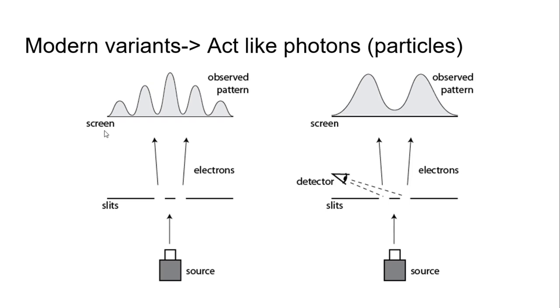However, there's a little bit more when we get to modern variants. If you, again, just like Thomas Young's experiment, just shoot it through the double slit, you get the pattern of the brightness and the darkness because of interference.